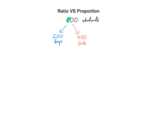Suppose we have a school which consists of 600 students in total, out of which 200 are boys and 400 are girls. If I were to ask you: what is the ratio of boys to girls?